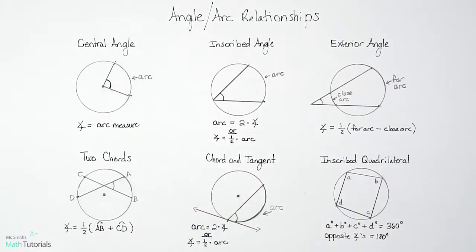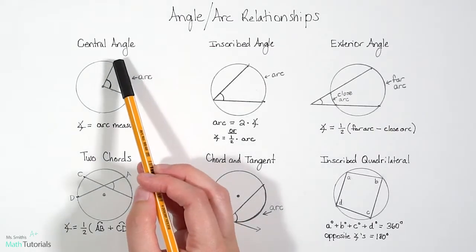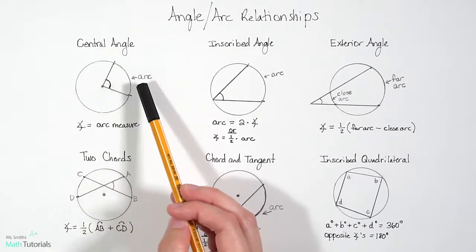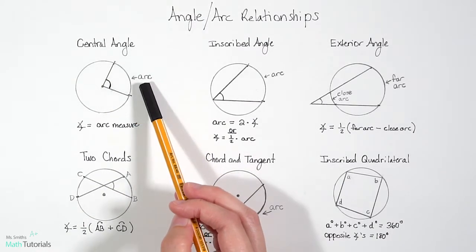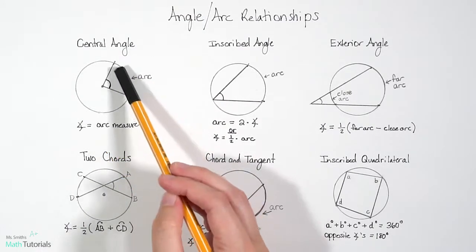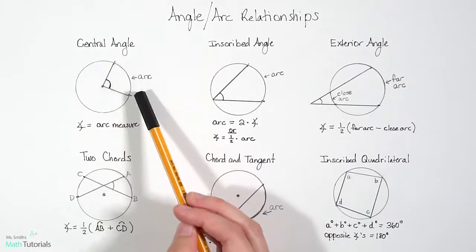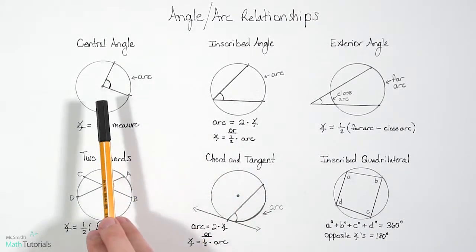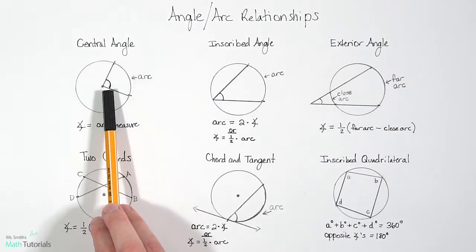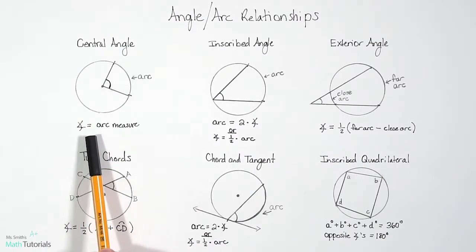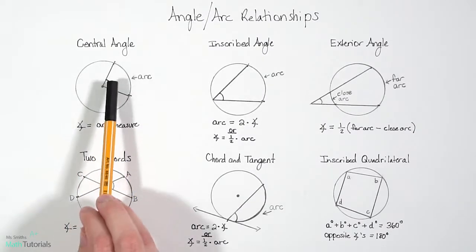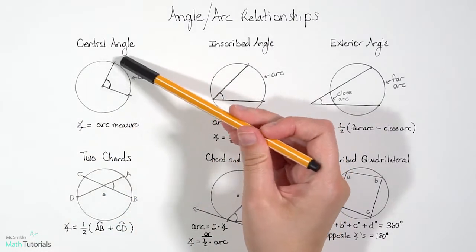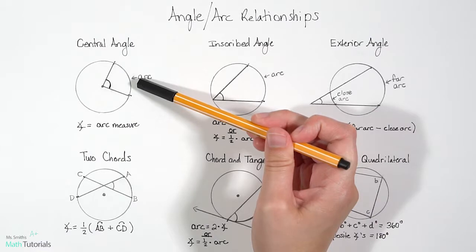Arc measure is also measured in degrees, and it's based on the fact that all circles are 360 degrees. So when we say from here to here is the arc measure, we're asking: out of that 360 degrees, what would this portion be? What's really cool is it's the exact same as the angle measure — the angle measure equals the arc measure. So if the angle were 85 degrees, the arc measure from here to here would also be 85 degrees.